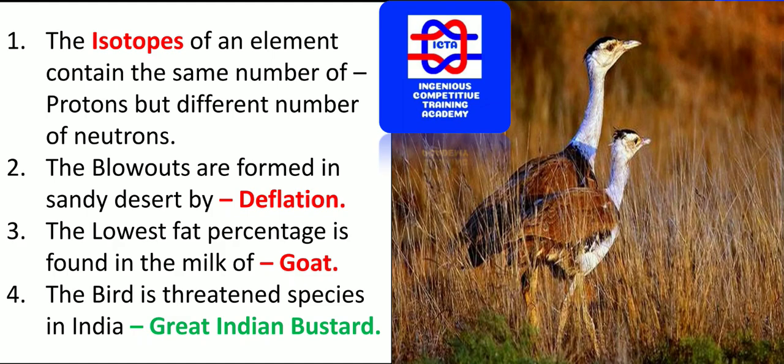Isotopes of an element contain the same atomic number, that is the same number of protons, but have a different number of neutrons. Those are known as isotopes. You should remember exactly what isotopes, isobars, and isoheights are — these are various terminologies you have to remember.